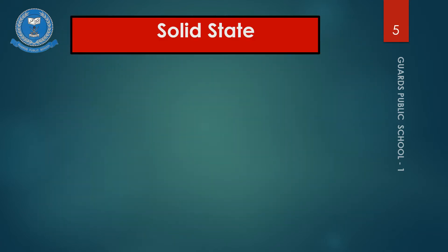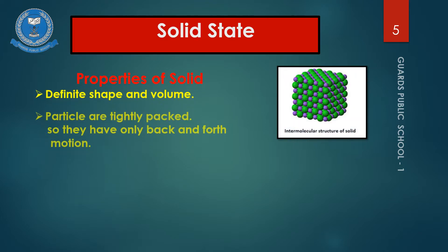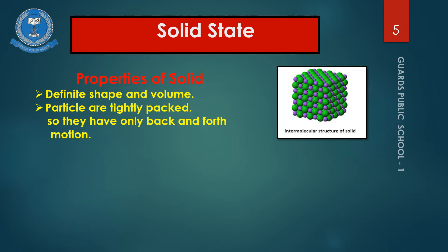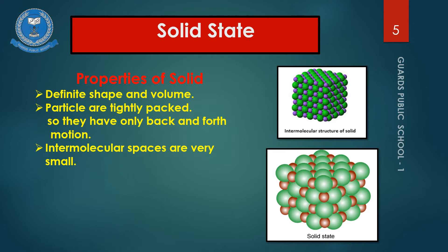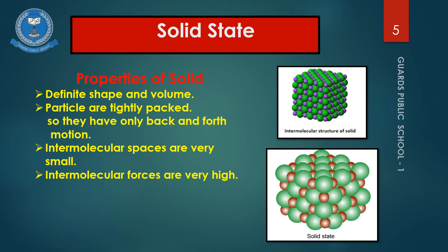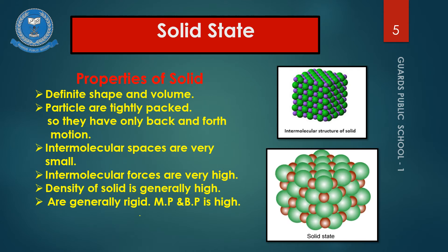Properties of solids: Solids have definite shape and volume because their particles are tightly packed. They have only back-and-forth vibrational motion and cannot leave their positions. Due to tight packing, intermolecular spaces are very small, and intermolecular forces are very high because molecules are very close. Density of solids is generally high, they are rigid, and their melting point and boiling point are high.